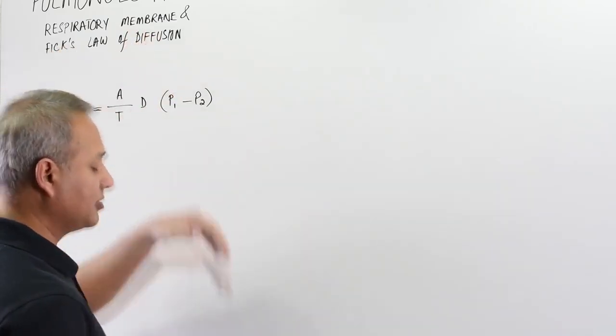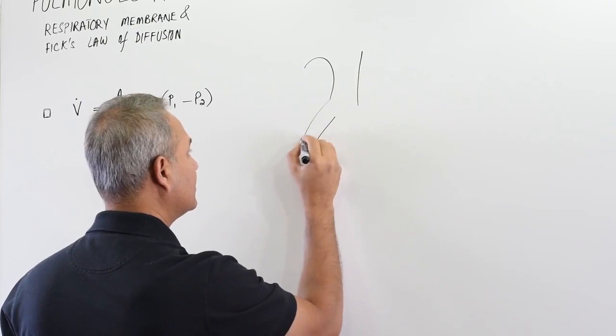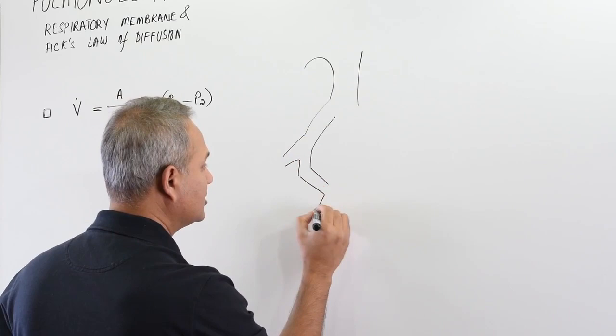What is the respiratory membrane? As the air moves in, it goes through the respiratory airways which is trachea, then bronchi, then smaller bronchi, finally we reach the bronchioles then we reach respiratory bronchioles.